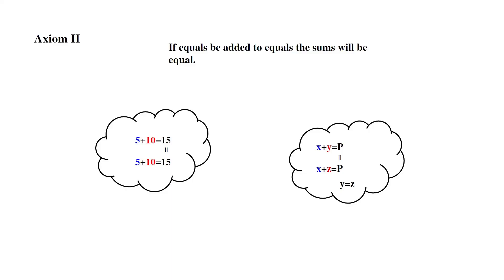Axiom 2: If equals be added to equals, the sums will be equal. Basically, 5 plus 10 equals 15, and 5 plus 10 equals 15, so 15 equals 15, which means 10 equals 10. Same with x plus y equals p, and x plus z equals p — if p equals p, that would mean y equals z.